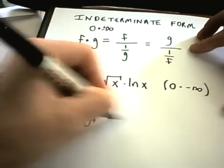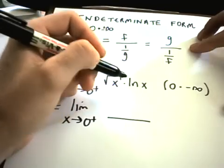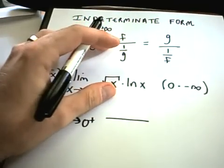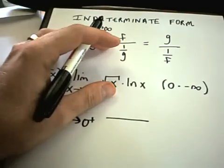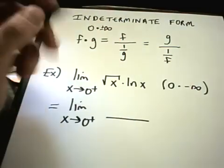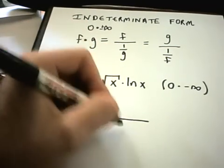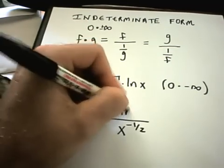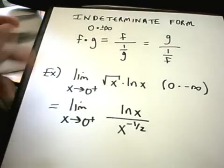And I've got two choices. I could either take 1 over ln of x and put that in the bottom. But I think when you go and start taking derivatives, you're going to find that that actually gives you a slightly more complicated expression. So my x to the 1 half, I'm going to move him to the denominator and make it x to the negative 1 half times ln of x.